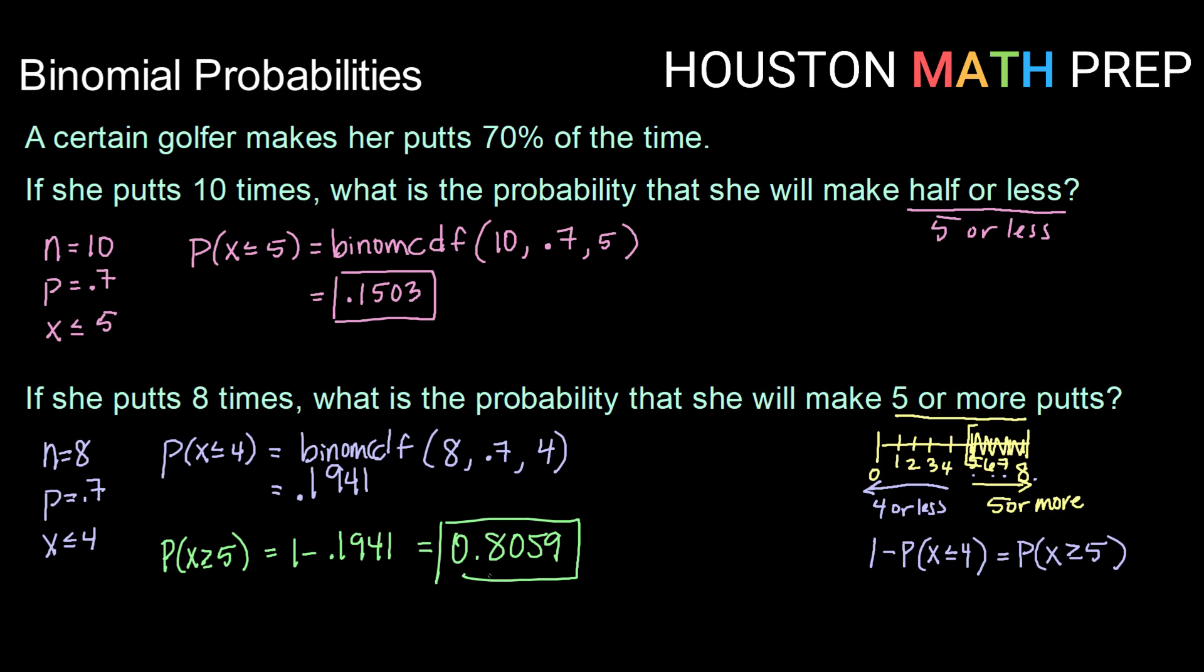So when we need to find the probability of making 1 number or more on a binomial probability experiment, we need to do 1 minus whatever is fewer than that. Alright guys, that does it for this video on binomial experiment probabilities. We'll catch you in the next one.